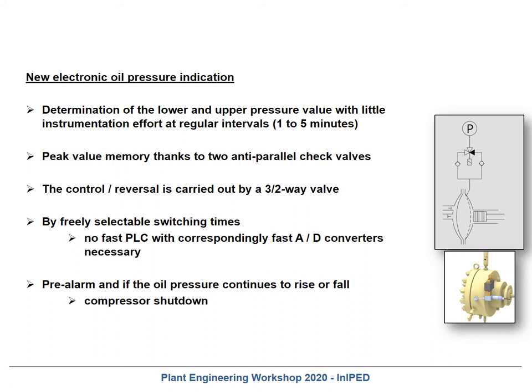Something in between is this new electronic oil pressure indication. We can determine the lower and upper pressure values with little instrumentation effort at regular intervals — for example every one or five minutes. The peak value memory is achieved thanks to two anti-parallel check valves. By switching these three-way valves from one side to the other, we can either monitor the highest pressure or monitor the lowest pressure. The control and reversal is carried out by a three-way, two-way valve. By freely selectable switching times, no fast PLC with corresponding fast A/D converters is necessary.